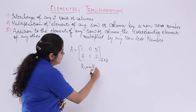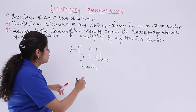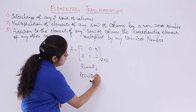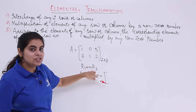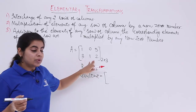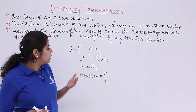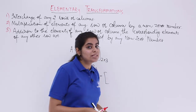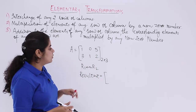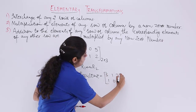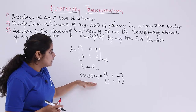Suppose we have matrix A with elements [1, 0, 5; 3, 1, 2] — a 2×3 matrix. To apply the first elementary transformation, we write R1 interchanged with R3. But wait — does R3 exist? No. So writing R1↔R3 is incorrect. We must write R1↔R2. The resultant matrix becomes [3, 1, 2; 1, 0, 5].